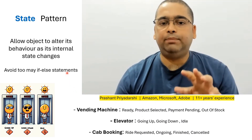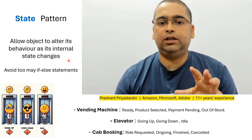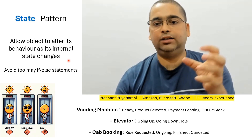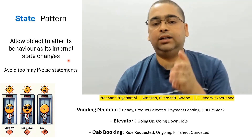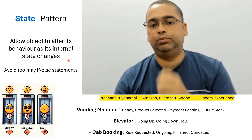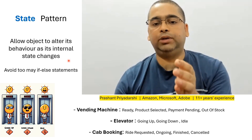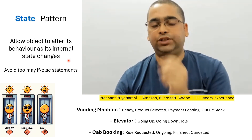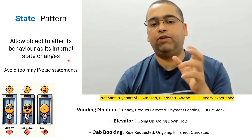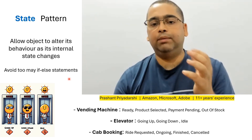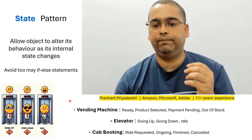We use the state design pattern in scenarios where the behavior of an object — that is, the execution of its methods — changes as the internal state of the object changes. Internal state is simply the value of instance variables. Using the state design pattern, we can avoid many if-else statements and make our code less complicated and easier to maintain.